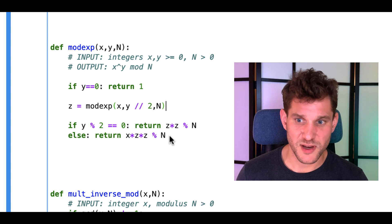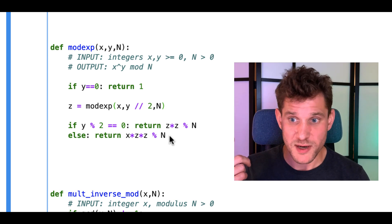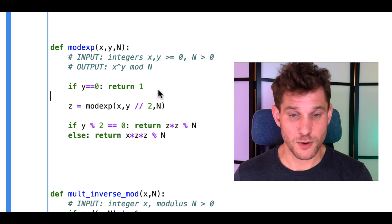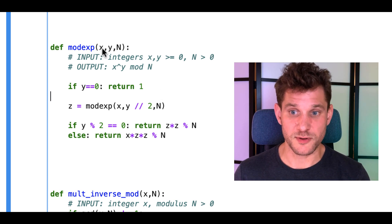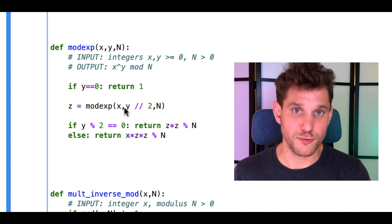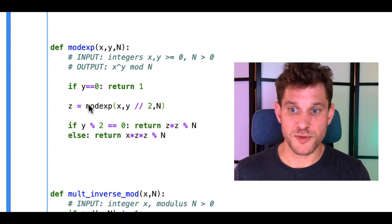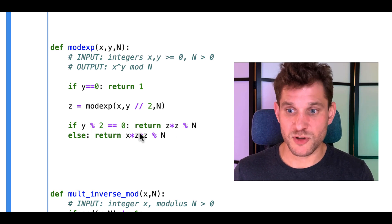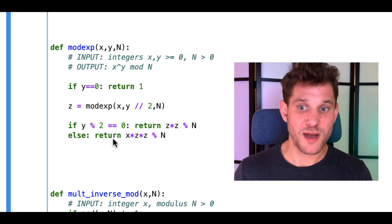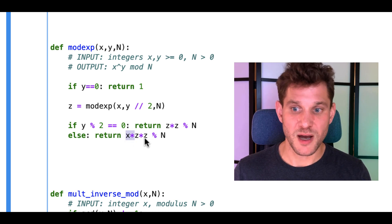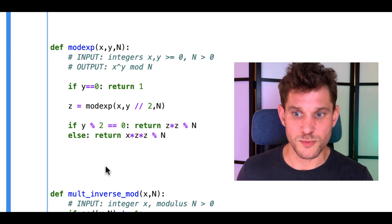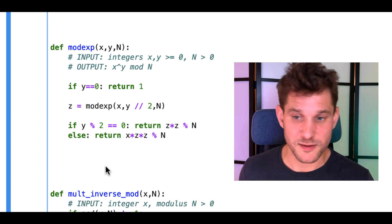We also learned about modular exponentiation, where we have to take x to the y mod n. There's a simple algorithm: first check if y is zero and return 1, since x to the zero is always 1. Then compute z = mod_exp(x, floor(y/2), n). If y is even, return z squared mod n. If y is odd, you lost a factor of x, so return x * z squared mod n. This is a very fast algorithm — it takes on the order of n cubed, where n is the number of bits of x and y.